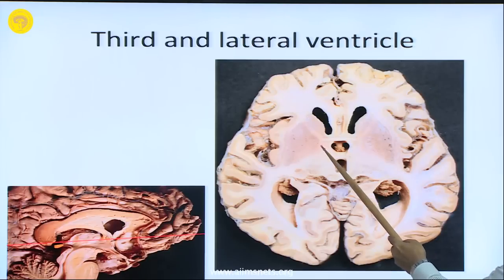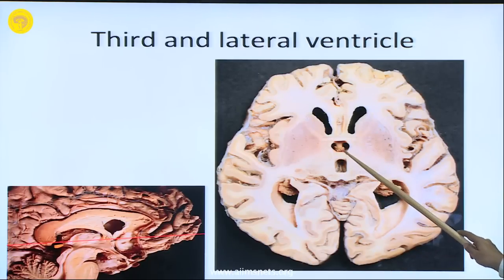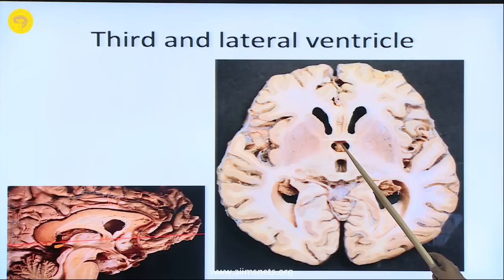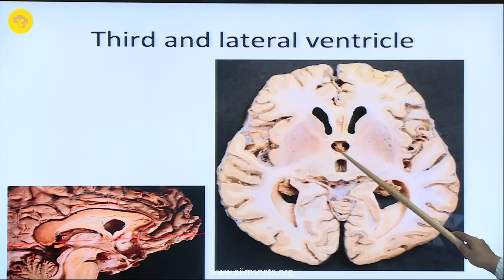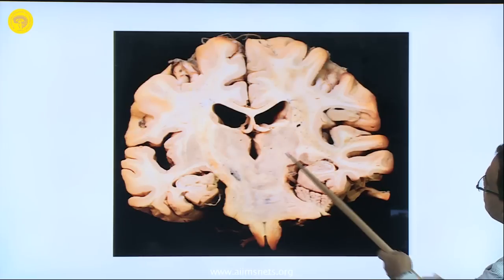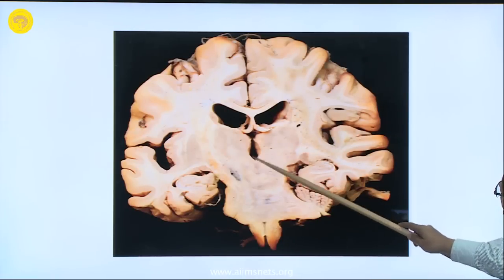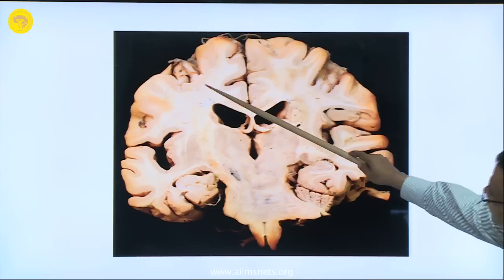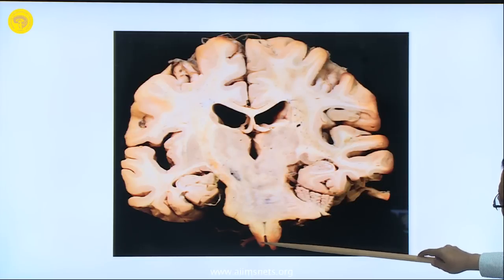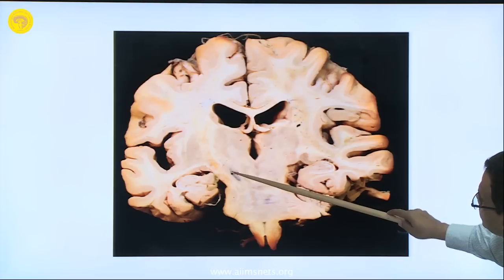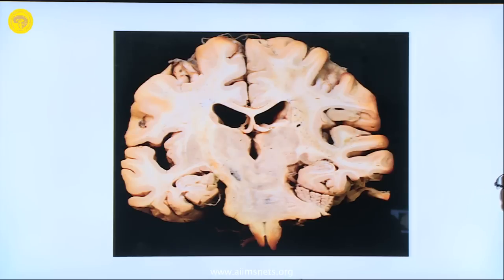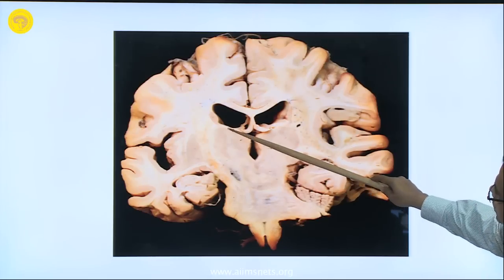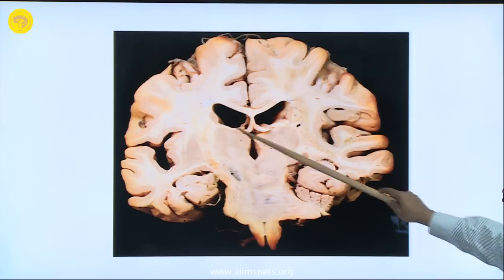The anterior commissure is here and the anterior recess — we are looking from below, that is why the anterior recess you can see above the anterior commissure and in between the two columns of the fornix. Here is the lateral ventricle body and the third ventricle; the internal capsule is continuing as crus cerebri and the pyramid you can see. The substantia nigra is here; the red nucleus is in this portion, and the thalamus with different nuclei divided by white matter is there.